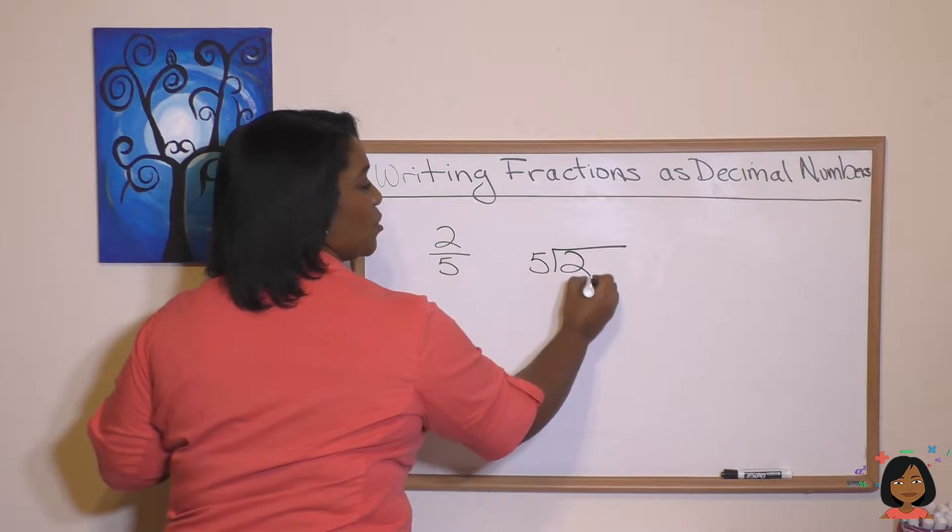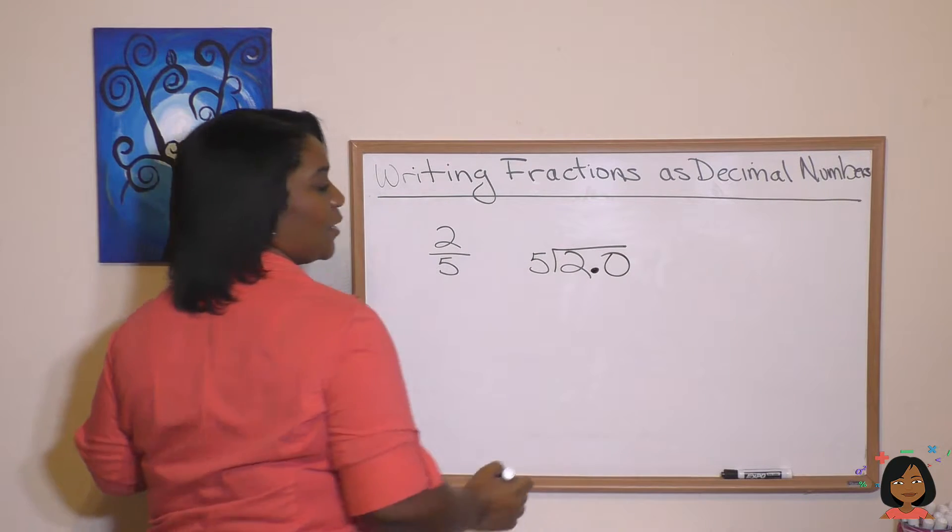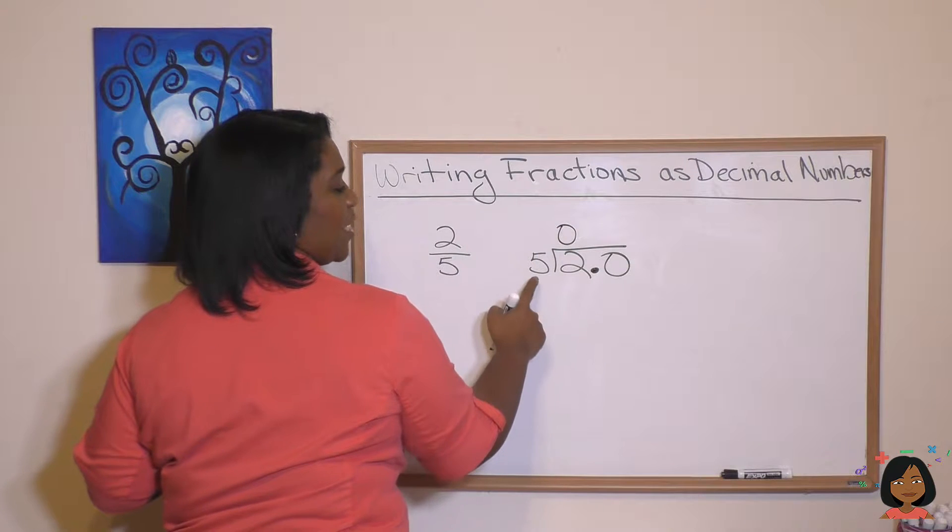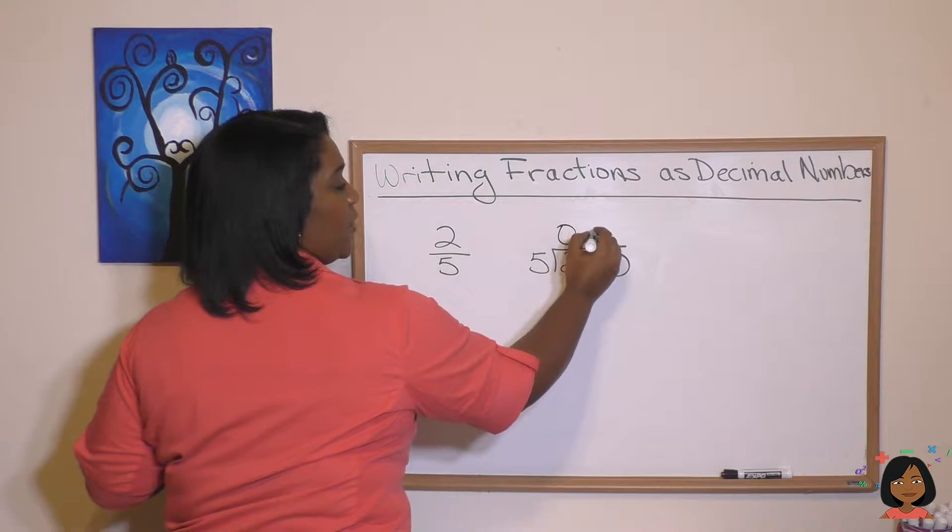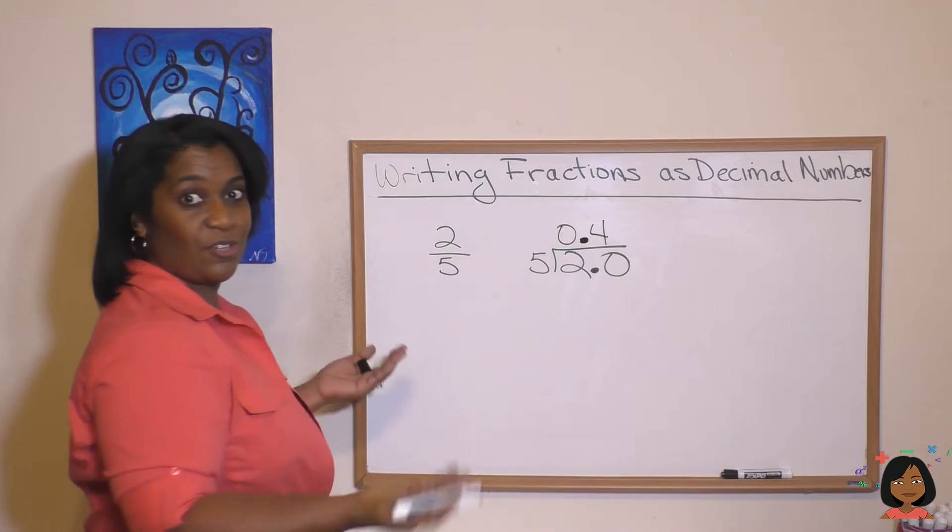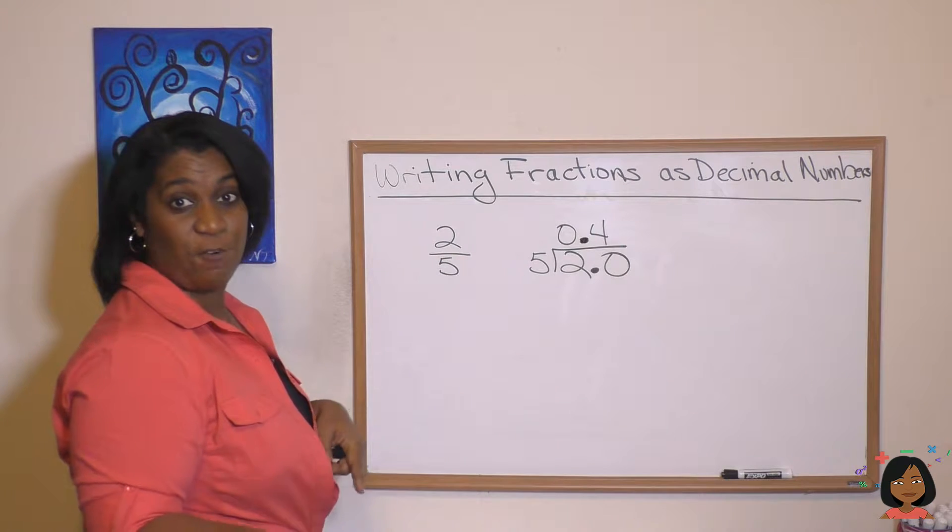5 goes into 2. I'm going to put my decimal down right there. I think I'm going to need it. Let's divide. 5 goes into 2, 0 times. 5 goes into 20, 4 times. And I bring my decimal up. The equivalent for 2 fifths in decimal form is 0.4.